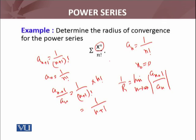Here I have used that n factorial equals (n-1) factorial times n. This formula I have used. So for this ratio, now I need to consider the limit as n approaches infinity.